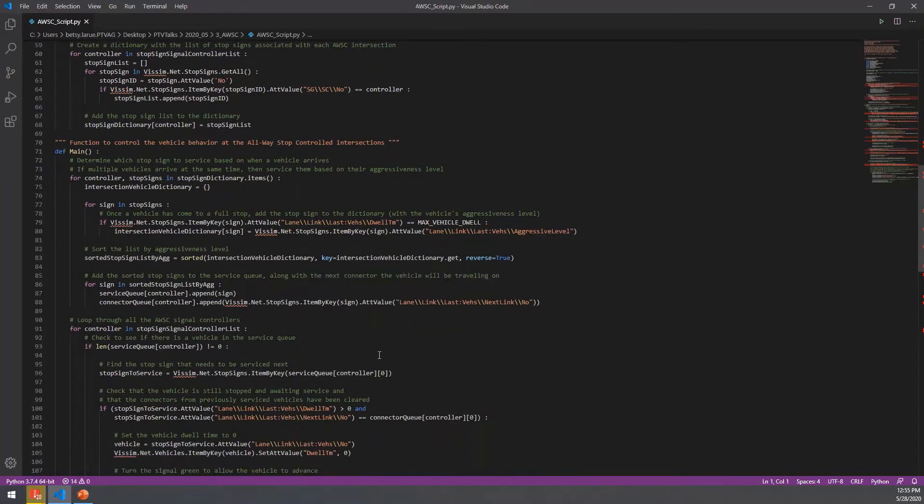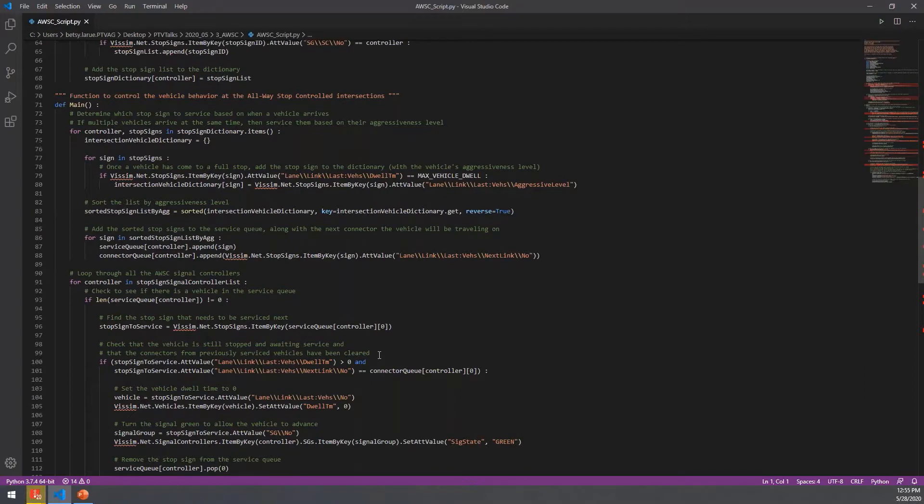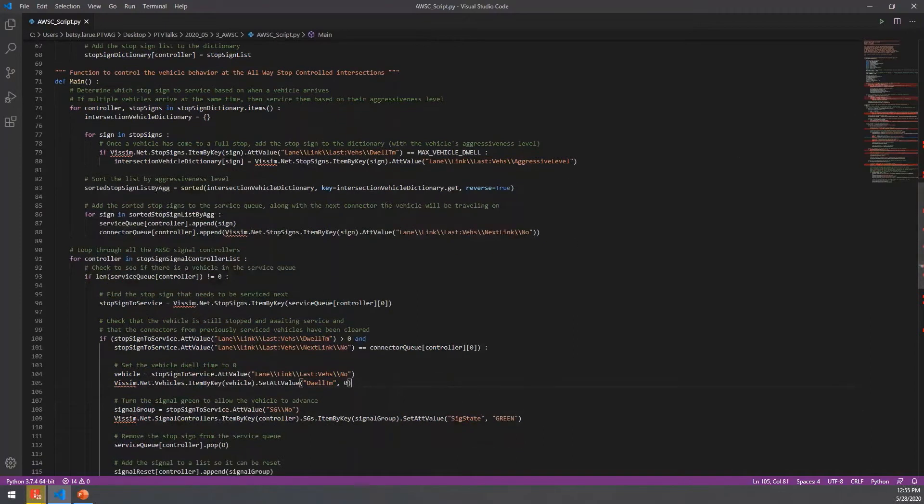And then we'll have this main function, which will run each time step. And this is what's going to create that list of vehicles in the proper order, as well as control the vehicle dwell time resetting, and also control the signal states that get set for the signal controllers, as well as check the connector and downstream link occupancy.